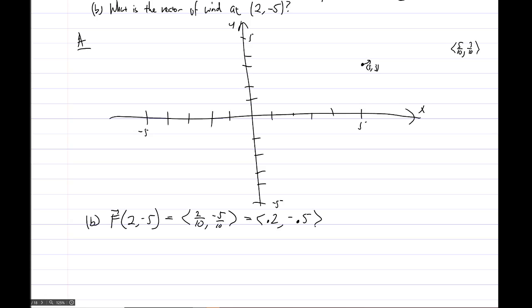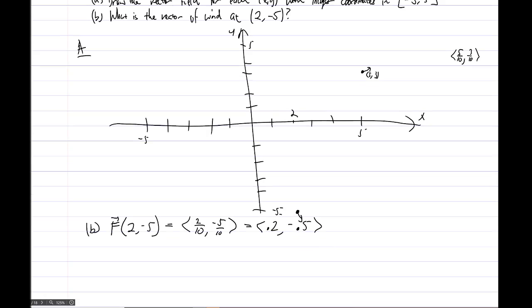0.2 comma negative 0.5. Okay, and over at 2 comma negative 5 anyway, right here, you probably already drew in a vector that's a little to the right and mostly down. So it's actually probably pointing like this way, roughly speaking. Okay, so that's the vector of wind. So at the point 2 comma negative 5, the wind is 0.2 comma negative 0.5.